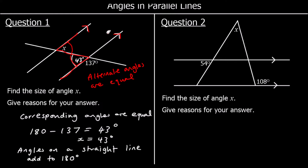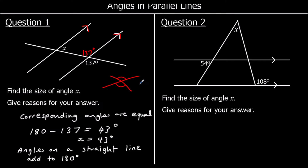I'm going to answer it one more time differently. We could have said opposite angles are equal — so two angles that make an X shape, the two opposite angles are equal. We could also say co-interior angles add up to 180 degrees, so X must be 43. There are many ways of answering it; it doesn't matter which one you pick, as long as your reasons are right and your answer is right.